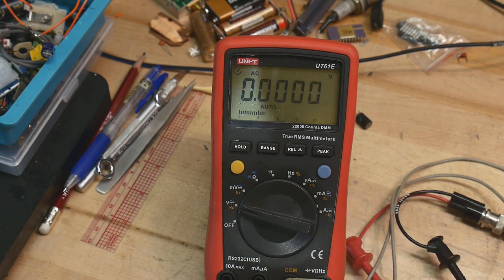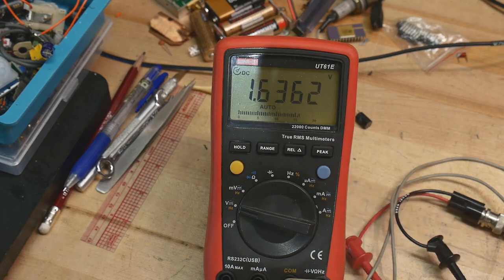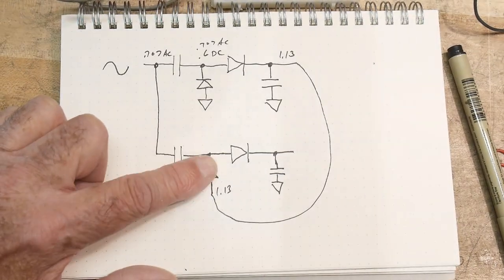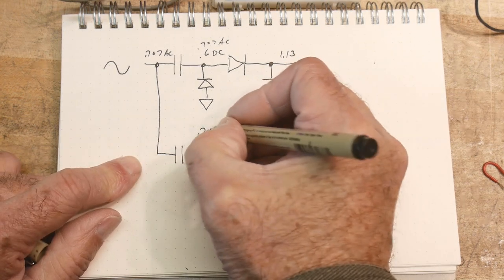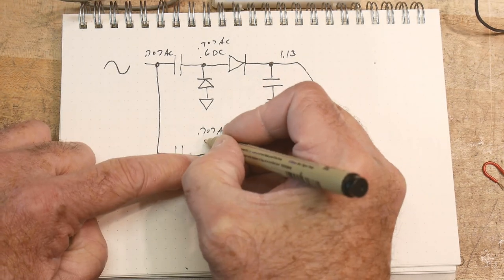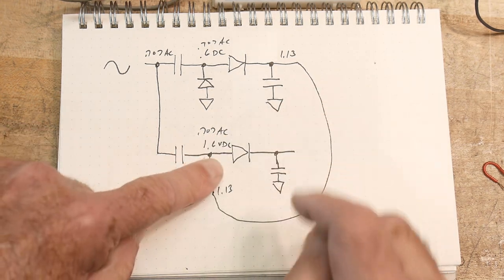Let's look at AC. We should still have 0.707 AC, and we do. We still have 0.707 AC. So now here, we have 0.707 AC, but here we have 1.6 volts DC.